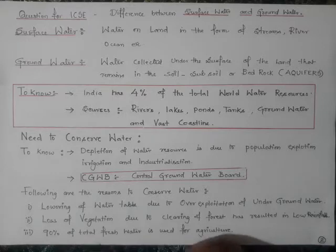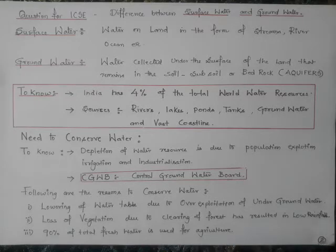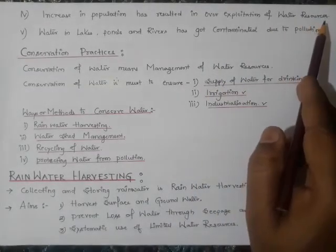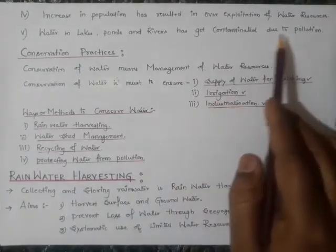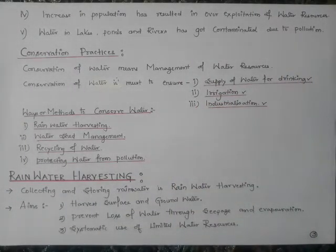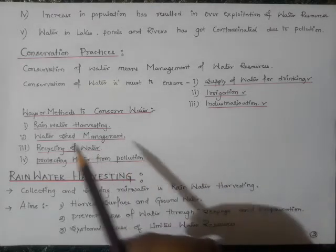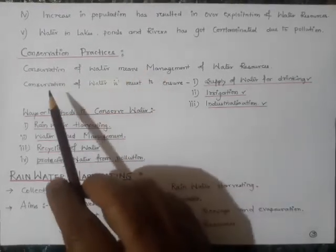Thirdly, out of total fresh water available, 90% is used for agriculture, leaving little for drinking or other purposes. Increase in population has also resulted in over-exploitation of water resources. Water in lakes, ponds, and rivers has become contaminated because river water is being used as a mode of drainage where industrial waste is discharged, contaminating fresh water sources.